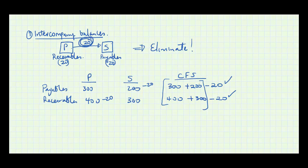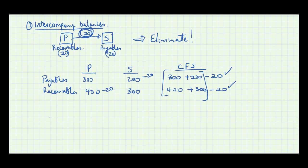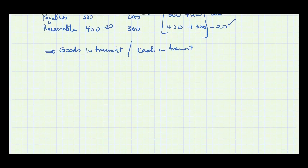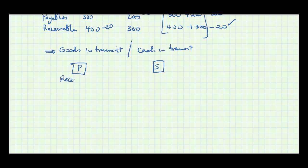There is an additional complication with intercompany balances relating to goods in transit. Consider a scenario where the parent has an intercompany receivable of 100 — in an ideal scenario the subsidiary would also have an intercompany payable of 100 because it's the same transaction.